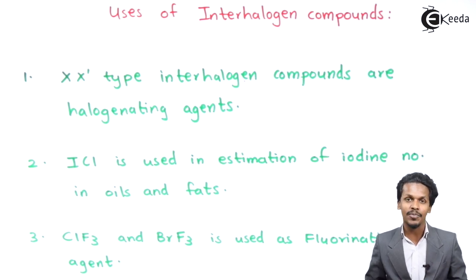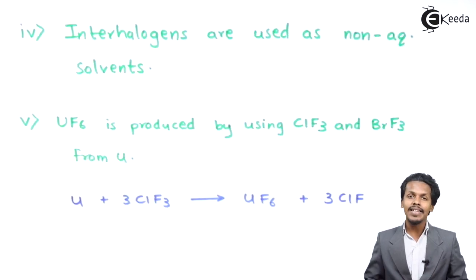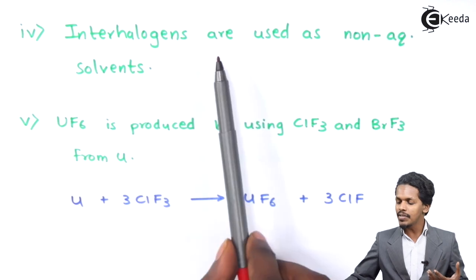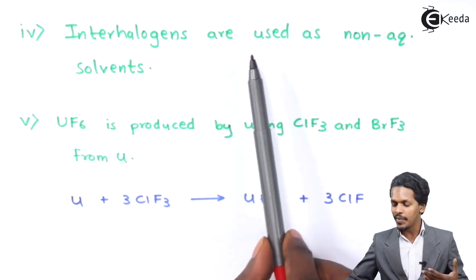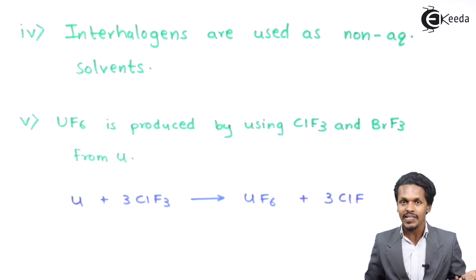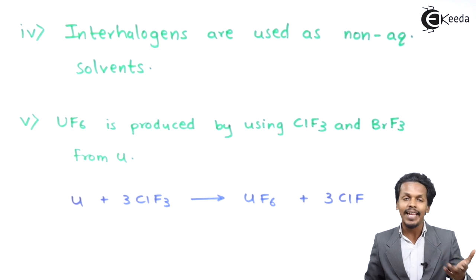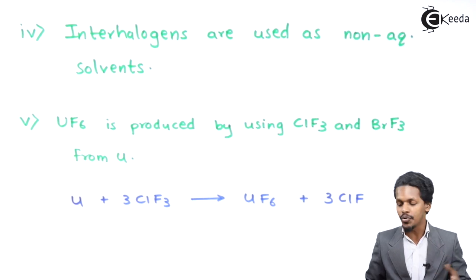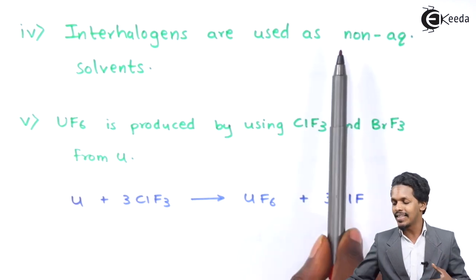The next point is that interhalogen compounds are basically used as non-aqueous solvents. As discussed earlier, they can form liquid compounds, and that is the reason they are also used as non-aqueous solvents.